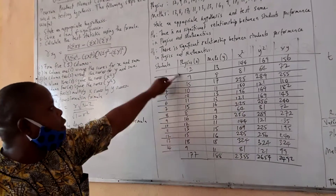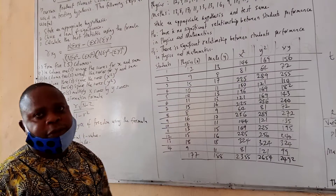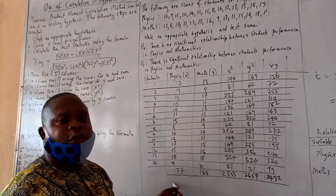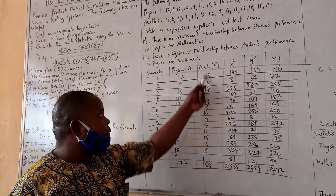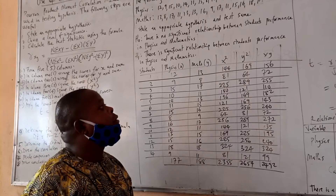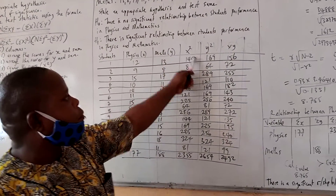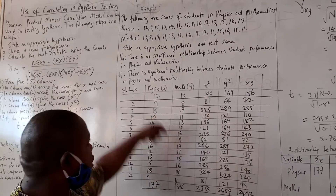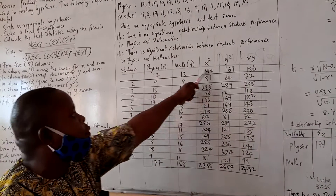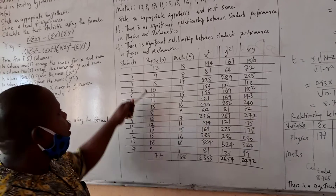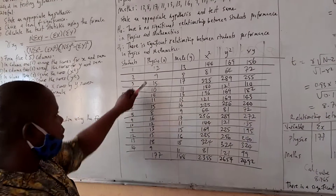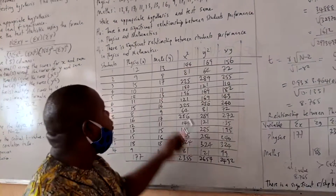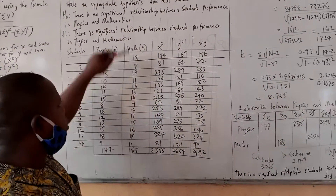Physics scores are listed as X, and mathematics scores are listed as Y. We sum them: summation X for physics is 177, and summation Y for mathematics is 188. In the third column, we square all the X scores — the physics scores. For instance, 12 times 12 gives 144, 9 times 9 gives 81, 15 times 15 gives 225, 10 times 10 gives 100, and so on. In the fourth column, we square the Y scores.